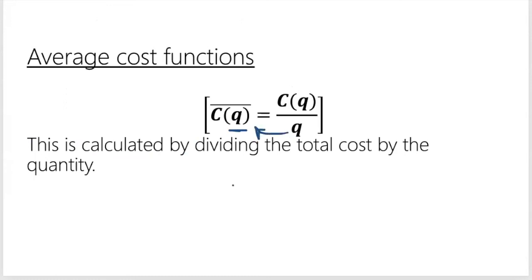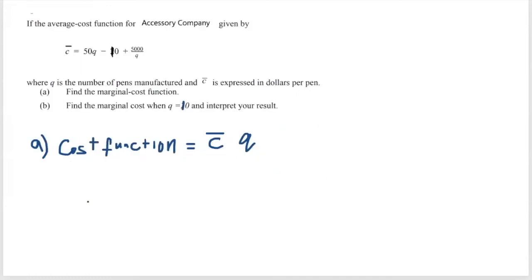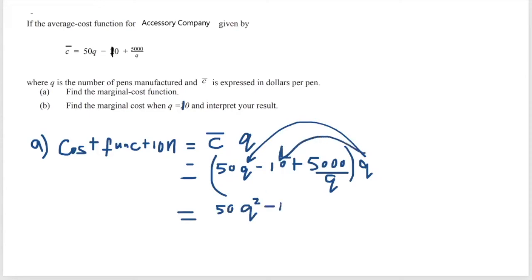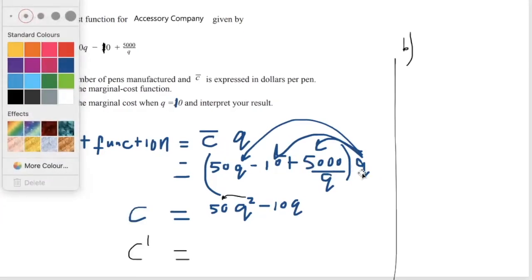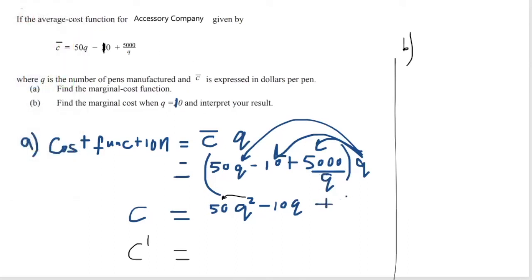So multiplying average cost times the quantity will give me my cost function. So I need to find the cost function first. I'm going to multiply 50Q minus 10 plus 5000 over Q, all of that represents the average cost function, and if I times it by Q, I will get my cost function. So it means I multiply 50Q times Q, that gives me 50Q squared. Then I multiply minus 10 times Q, that gives me minus 10Q. Multiplying Q times 5000 over Q, the Qs cancel, so I'm just left with 5000. So I'll have plus 5000. So this represents the cost function.